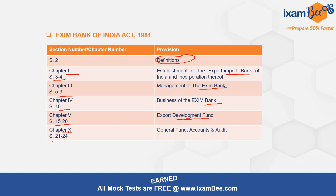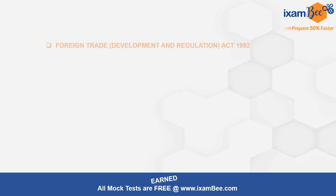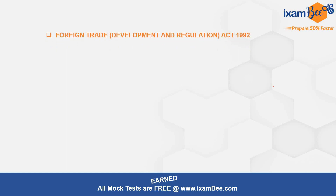Lastly, Chapter 10, covering Sections 21 to 24, talks about the General Fund and Accounts and Audit. All those provisions and aspects have been covered under this particular section. Now moving ahead, we can look at the important provisions related to the Foreign Trade Development and Regulation Act 1992.